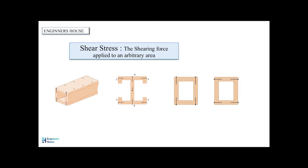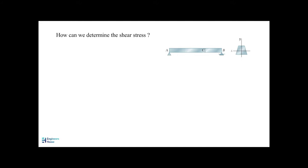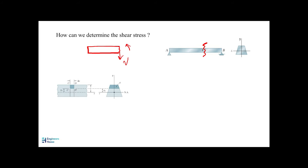To determine the shear stress, we can consider a prismatic beam with a cross-sectional area. If we cut this beam, we will see that the free body diagram of our section shows that the beam can be applied to many forces. We are not going to find the magnitude of V; we assume it is given already. So this is the free body diagram with the shear force and the bending moment.